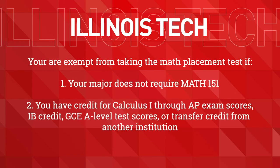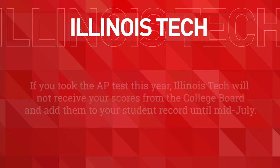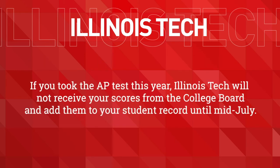If your major does not require Calculus 1, then you do not need to take the placement test. If you have credit for Calculus 1 due to your advanced placement exam score, International Baccalaureate credit, GCE A level test scores, or transfer credit from another institution, then you are not required to take the math placement test. Please note that if you took the AP test this year, Illinois Tech will not receive your official test scores from the College Board until mid-July.